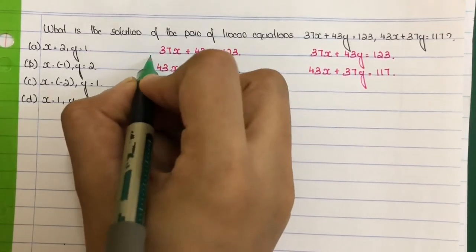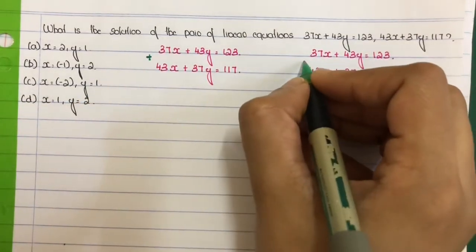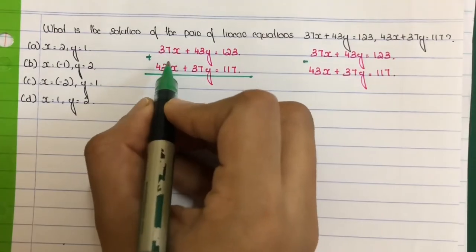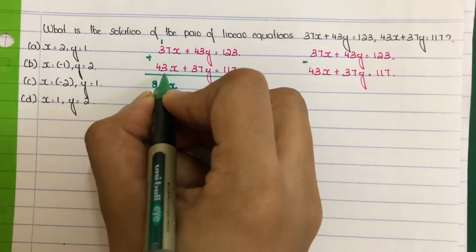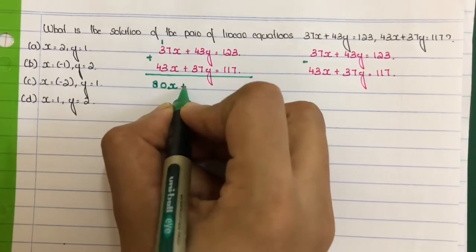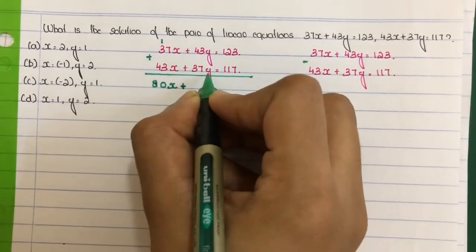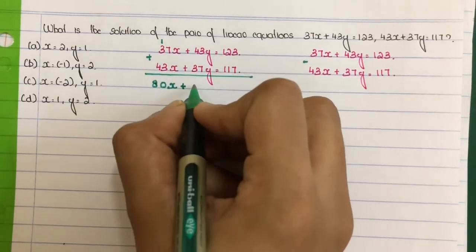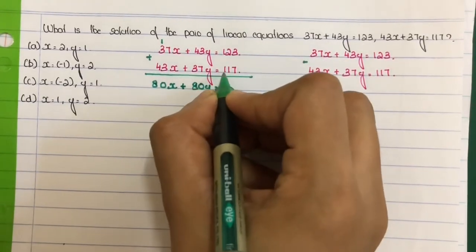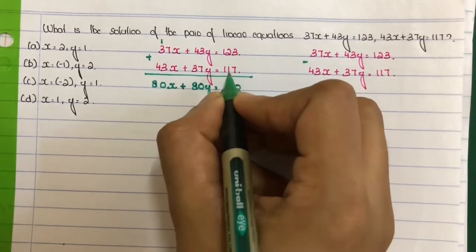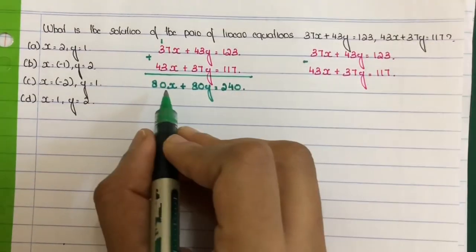Add and subtract this equation. First, add the x coefficients: 37x plus 43x equal to 80x. Plus 43y plus 37y, that is 80y, is equal to 123 plus 117, which is 240.